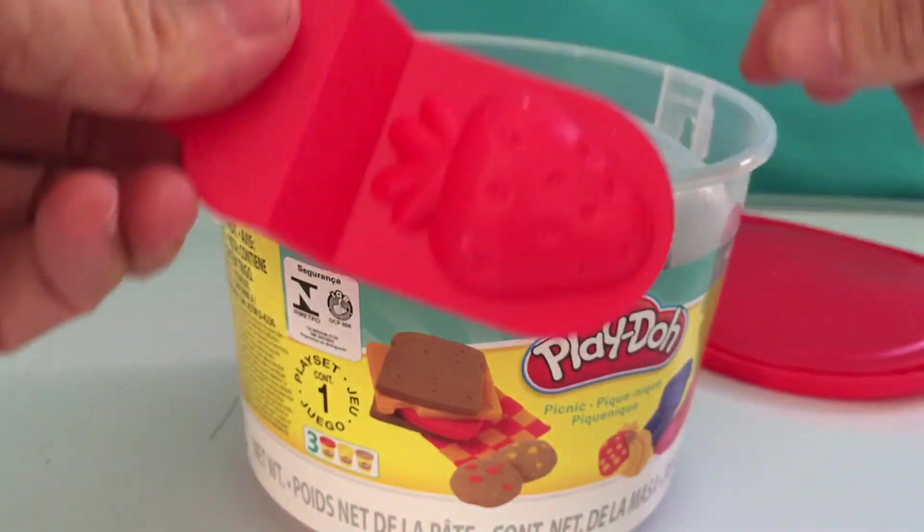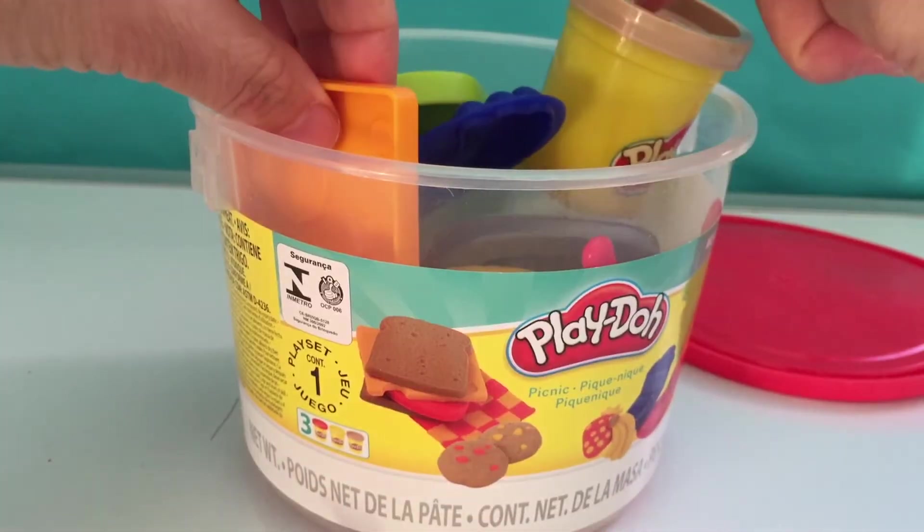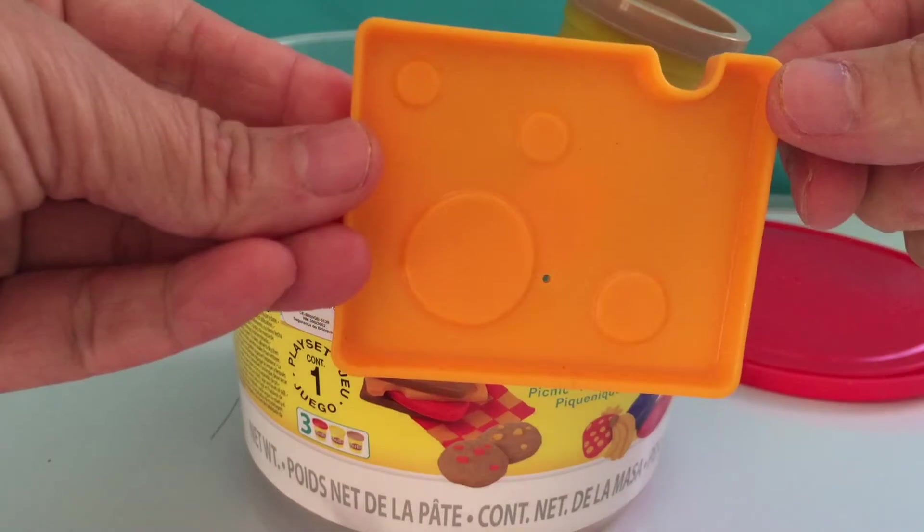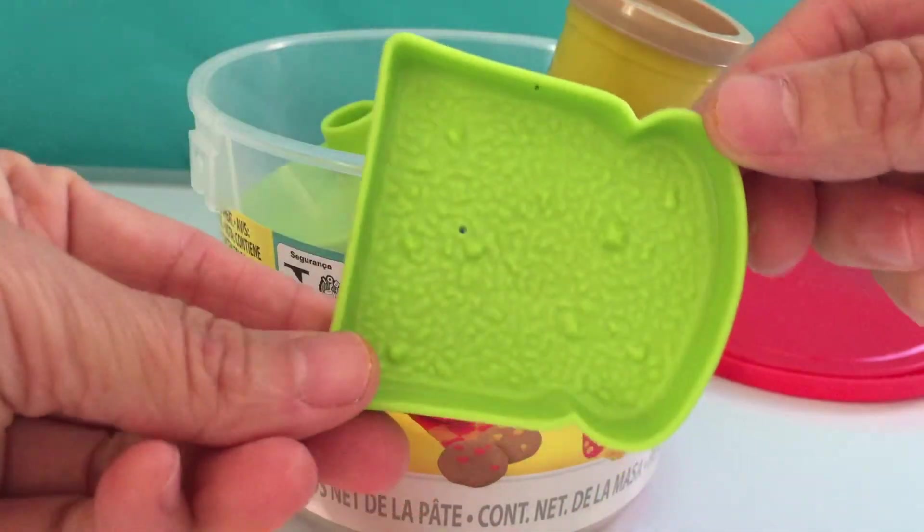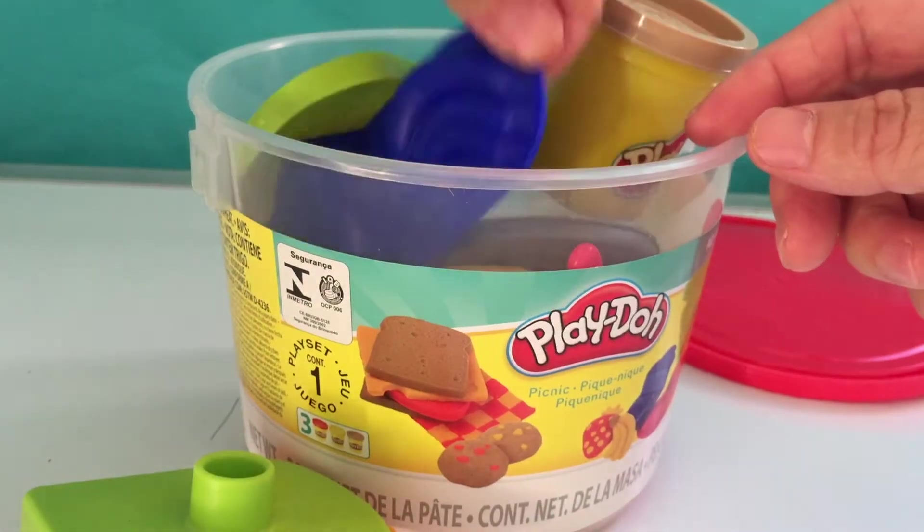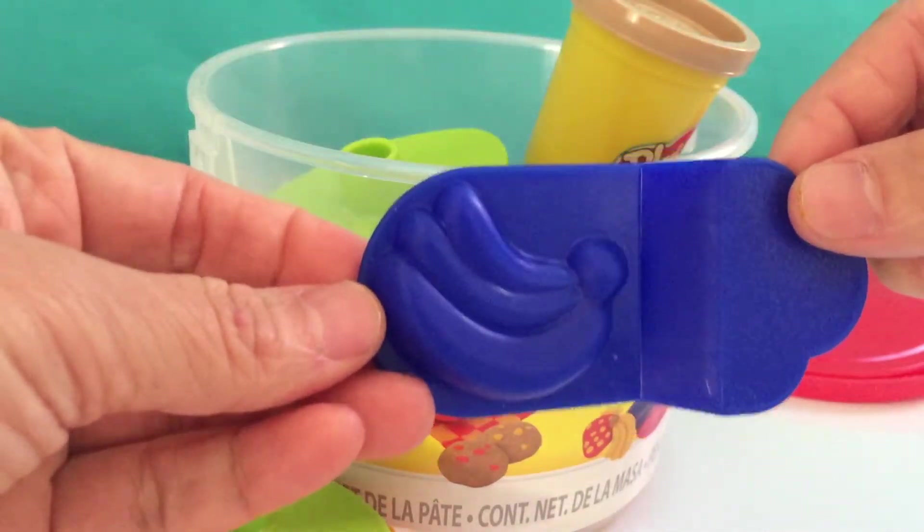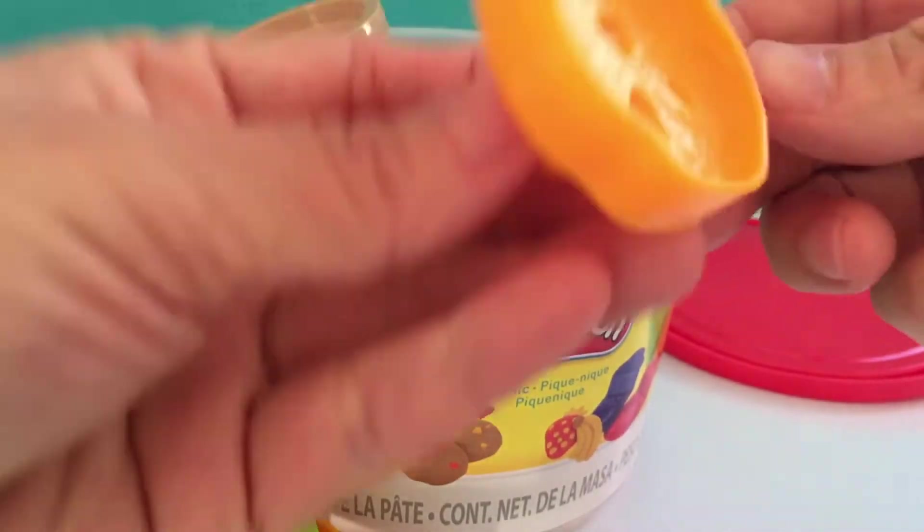This is our strawberry mold. This is a cheese mold. This is bread mold. This is banana mold. And this is the biscuit mold.